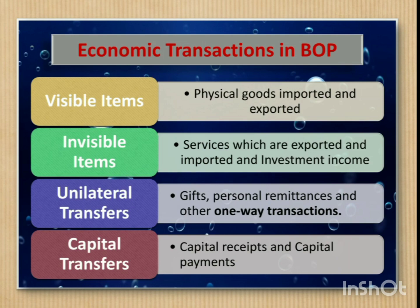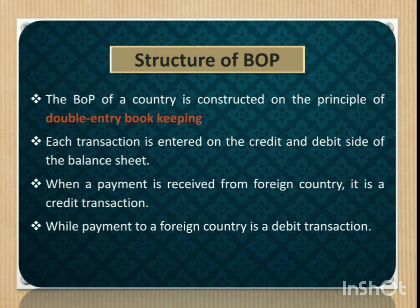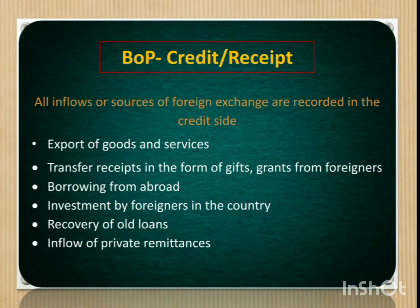The structure of balance of payment is constructed on the principle of double entry bookkeeping. That means each transaction is entered on the credit and debit side of the balance sheet. When a payment is received from a foreign country, it is a credit transaction, while payment to a foreign country is a debit transaction. The credit items in the balance of payment are capable of bringing foreign currencies into the country. Simply, all inflows or sources of foreign exchange are recorded on the credit side.